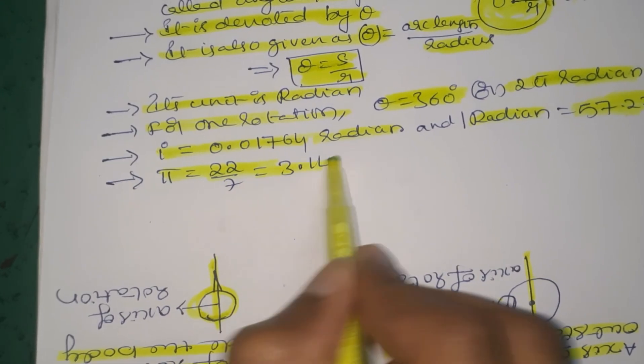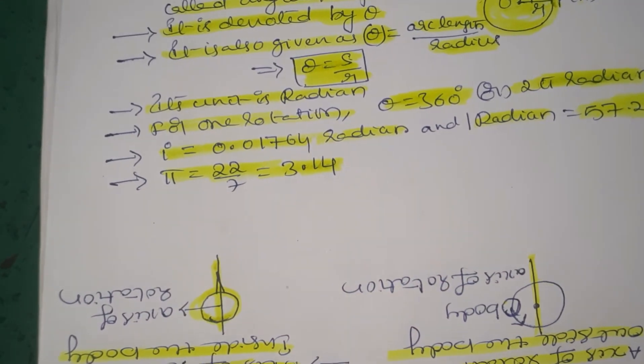Pi equals 22 by 7, which is approximately 3.14.